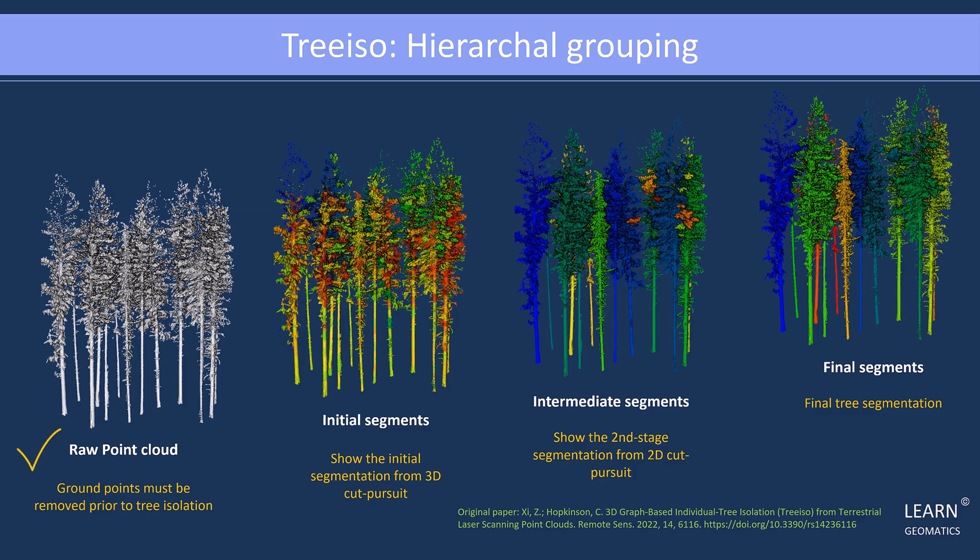Firstly, the ground points must be removed from the raw point cloud data. Next, the initial segmentation is performed using the 3D cut pursuit technique, resulting in small clusters forming meaningful patches of branches and crowns.